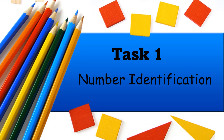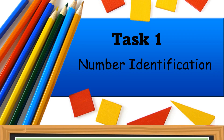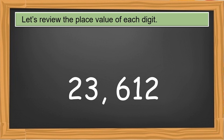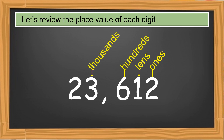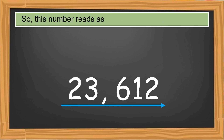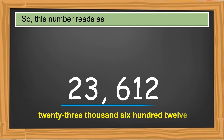Task 1: Number Identification. We have a number here. Let's review the place value of each digit: ones, tens, hundreds, thousands, ten thousands. We have to read this number from left to right. This number reads as 23,612.